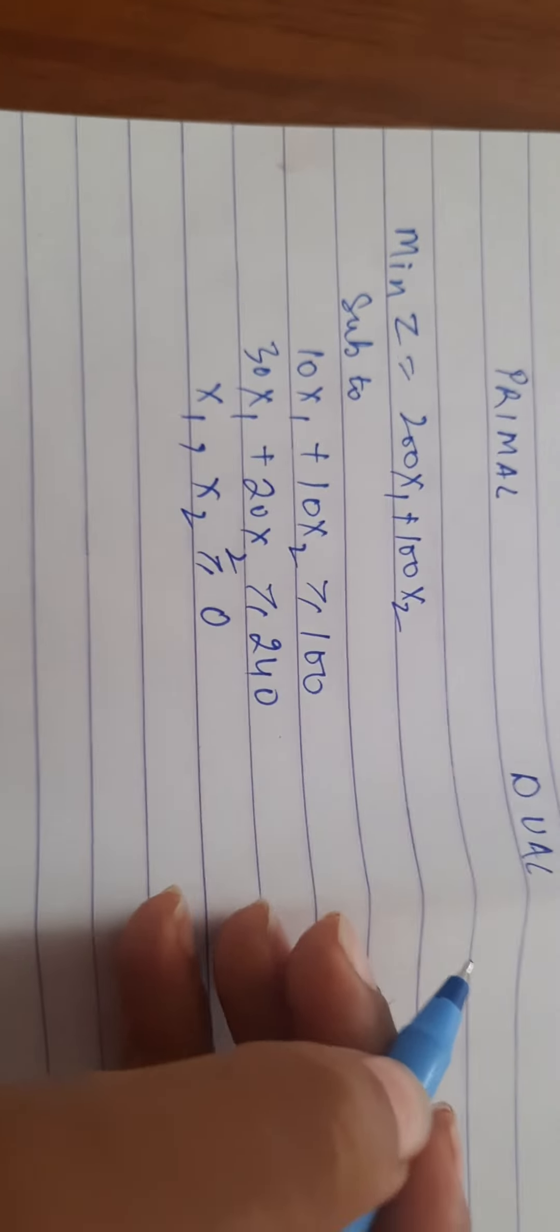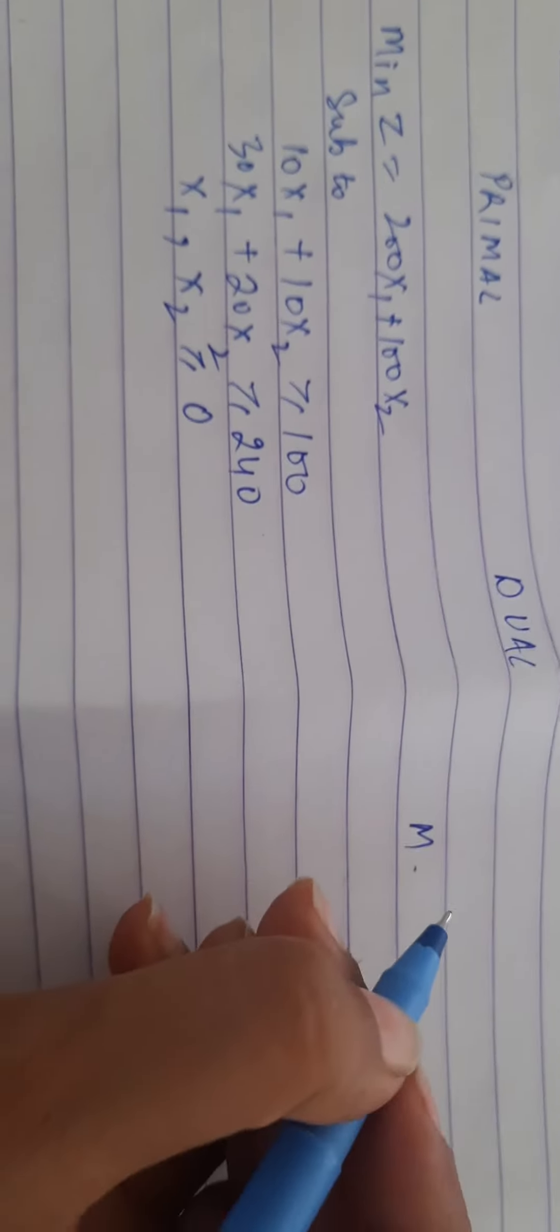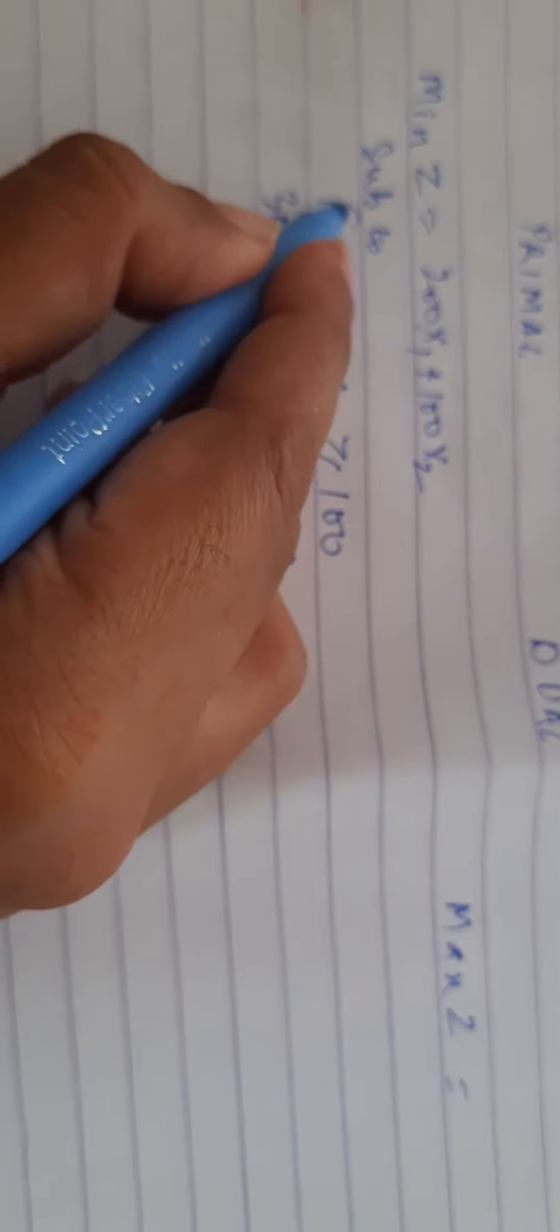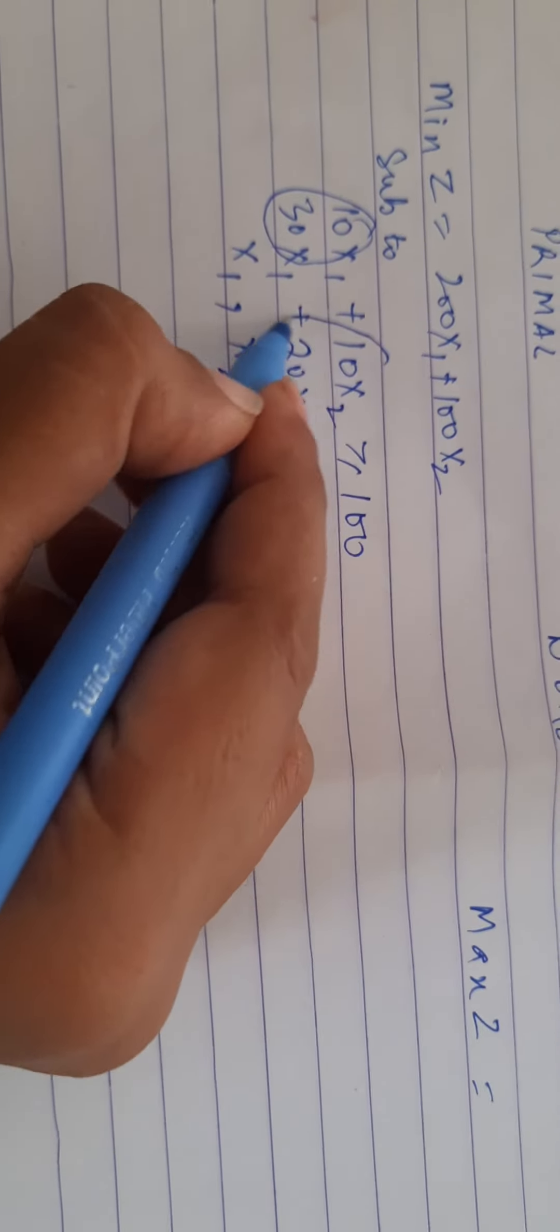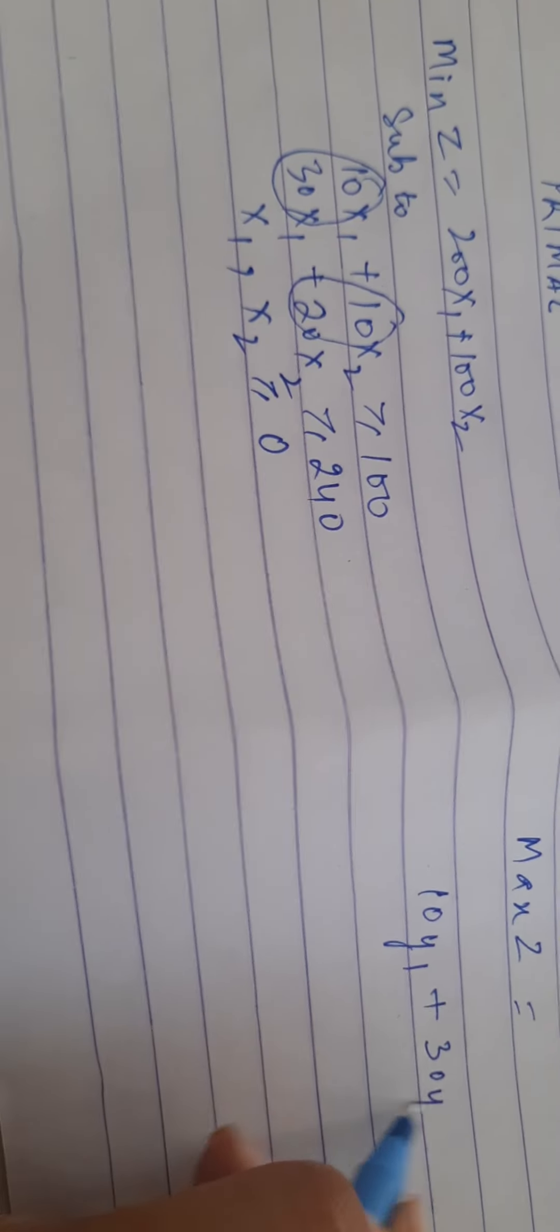So the dual in this case would be maximize z equals, now these constraints will now become my variables. So I will write 10y1 plus 30y2,